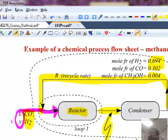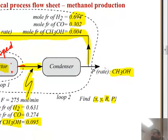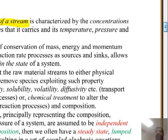In simulators like HYSYS or Aspen, a stream is characterized by concentration, temperature, pressure, and flow rate. If we assume the composition in the reactor is the same everywhere — well-mixed — then we have a lumped model. If the operation is at steady state, with feed coming in at a steady rate and product being produced at a steady rate, then we have a steady lumped model resulting in a set of algebraic equations, and we need to determine whether they are linear or nonlinear.